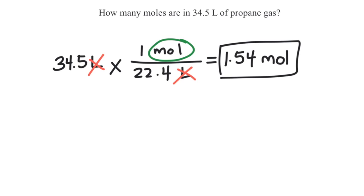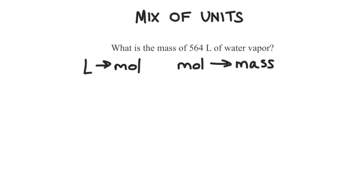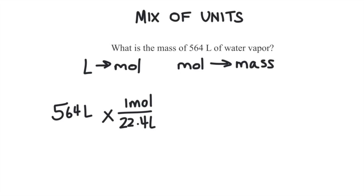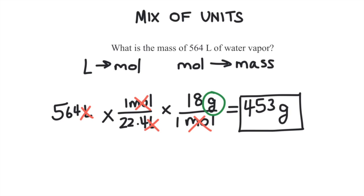The common unit between liters, grams, and number of things is the mole. Let's try one more problem: what is the mass of 564 liters of water vapor? You might be thinking you don't know a conversion factor between mass and volume, but you do know how to convert from liters to moles and then from moles to mass. This will take two conversion factors: 564 liters times 1 mole over 22.4 liters, times the molar mass of water, which is 18 grams per mole. And we get an answer of 453 grams.